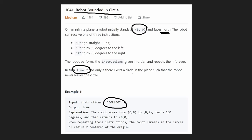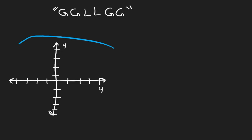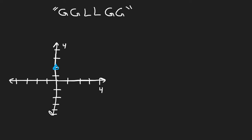Given these instructions, we want to return true if and only if there exists a circle in the plane such that the robot never leaves it — basically, does the robot get stuck in an infinite loop. Let's simulate an example: instructions are go, go, turn left, turn left, go, go. Initially we start at the origin facing north, move up twice, then turn left twice to face south, then move down twice, returning to the origin.